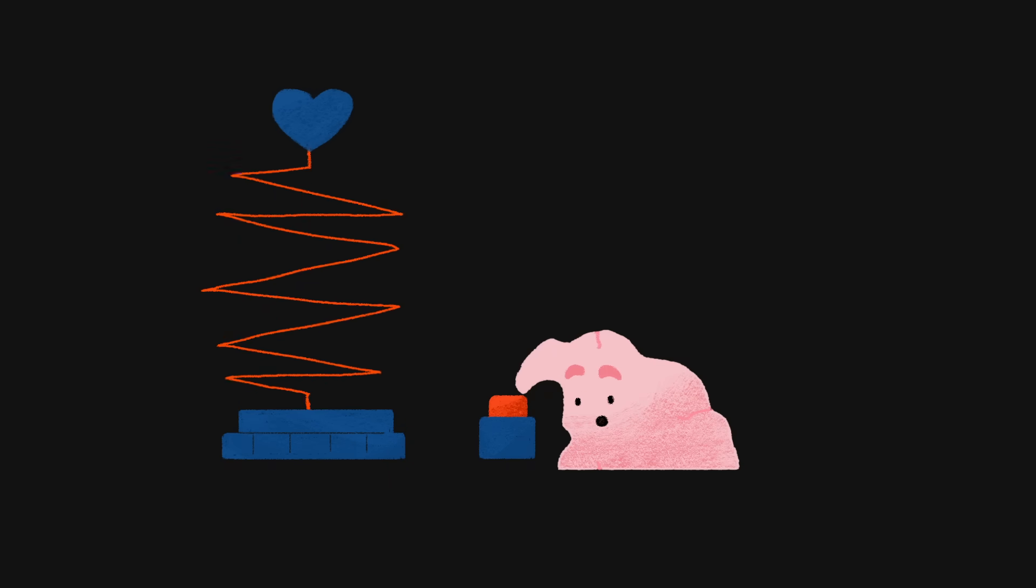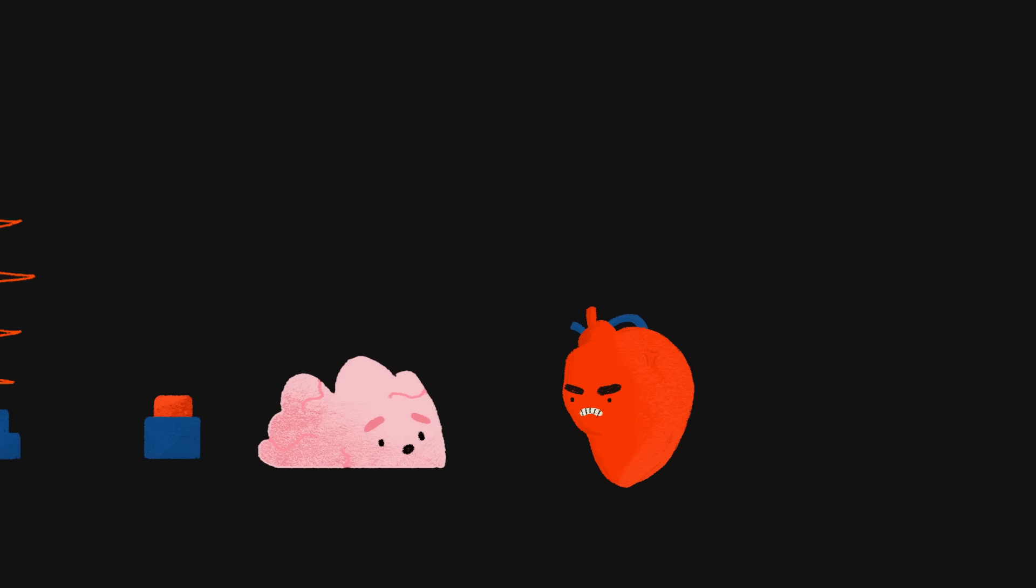A panic attack usually peaks within 10 minutes. Then, the prefrontal cortex takes over from the amygdala and stimulates the parasympathetic nervous system. This triggers the release of a hormone called acetylcholine that decreases the heart rate and gradually winds down the panic attack.